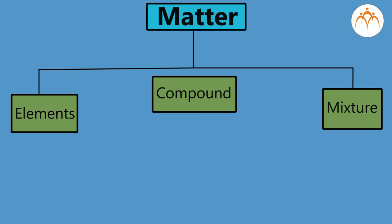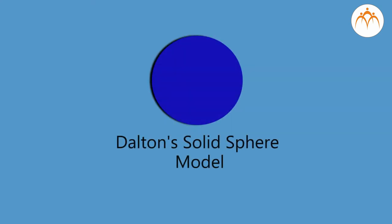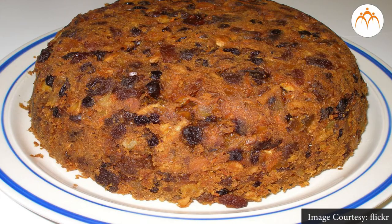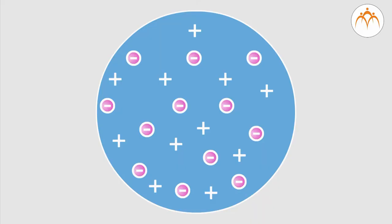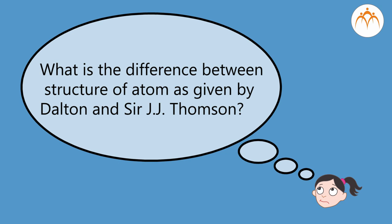In this video we studied that matter around us can be grouped as elements, compounds, and mixtures. We also learned about Dalton's model of an atom as a solid sphere with no internal structure. This model was further improvised by Sir J.J. Thomson — the plum pudding model — in which the atom is made up of positive charge with negatively charged electrons embedded in it like plums in a pudding. Now answer: what is the difference between the structure of atom as given by Dalton and Sir J.J. Thomson?